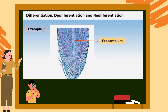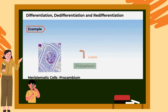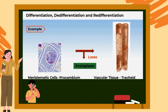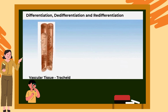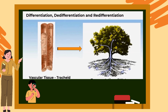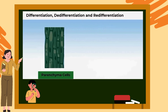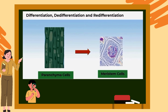Procambium cells, which are in the inner protoplasm, form vascular tissues like trachea. With the loss of protoplasm, strong, elastic, lignocellulosic secondary cell walls are formed. These cell walls help the plants to carry water over long distances and can withstand extreme tension. In plants, there is another interesting phenomenon: differentiated cells can regain the capacity to divide under certain conditions, forming new cells. This phenomenon is called de-differentiation.